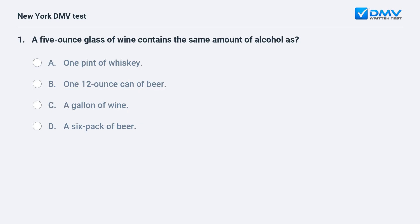A 5-ounce glass of wine contains the same amount of alcohol as: A. One pint of whiskey. B. One 12-ounce can of beer. C. A gallon of wine. D. A six-pack of beer.